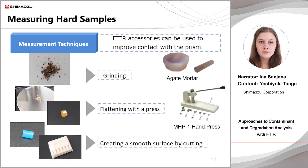Although ATR spectroscopy requires no pretreatment, the accuracy of qualitative analysis can be improved with a small amount of pretreatment. For ATR measurements, close, even contact with the prism is an important factor in obtaining a good spectrum. Hard or uneven objects have poor prism contact and it is difficult to obtain a good spectrum. Here are three ways to improve prism contact: if the substance is powdery, grinding it more finely will increase the contact area, using an agate mortar as used for making KBr pellets. When there is no flat surface, flattening with a hand press can be effective. It may also be possible to obtain a smooth cross-section by cutting the sample, which allows more contact with the prism.